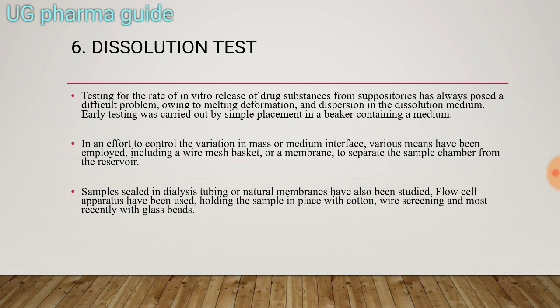The sixth test is the dissolution test, which measures the rate of in vitro drug release from suppositories. This has always posed a difficult problem owing to melt, deformation, and dispersion in the dissolution medium. Early testing was carried out by simple placement in a beaker. Various means have been employed, including a wire maze basket or membrane to separate the sample chamber from the reservoir. Samples sealed in dialysis tubing or natural membranes have also been studied, and flow cells holding the sample with cotton wire screening or glass beads have been used.